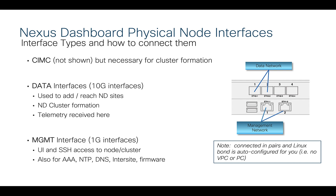Let's jump into some basic architectural fundamentals. When you receive your Nexus Dashboard cluster it is a cluster of three UCS servers — three nodes. On the back of the server, just like any server, there's a series of different networking interfaces. In the context of Nexus Dashboard each interface type has a certain job. The first one is the CIMC — that's not shown in the picture because it's basically an interface you connect for remote KVM and managing the server platform itself.